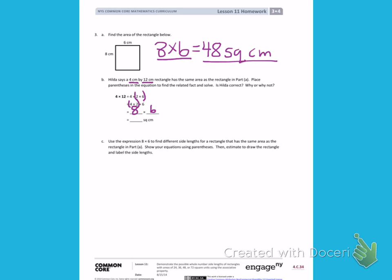8 times 6 is 48 square centimeters. You need to write in words if Hilda is correct and why or why not using the numbers that we just talked about.